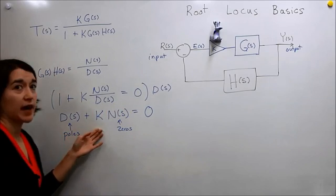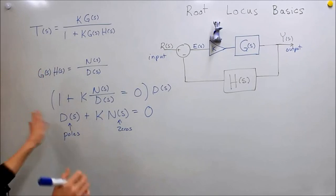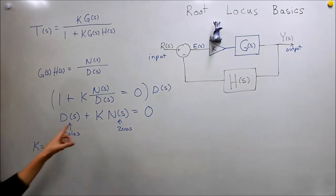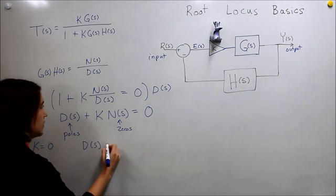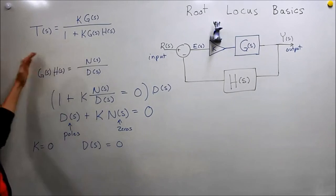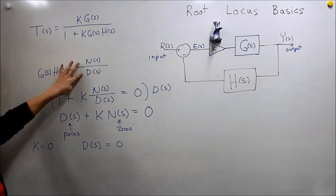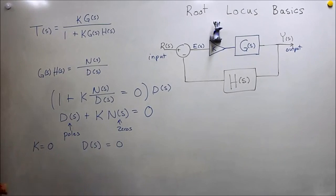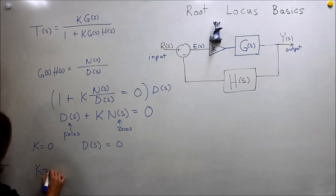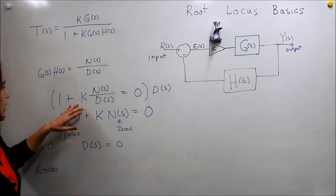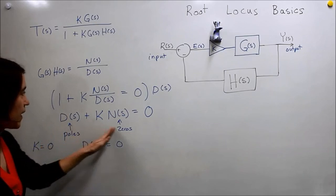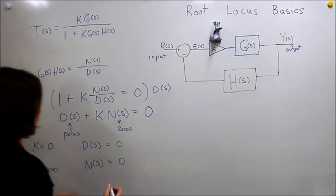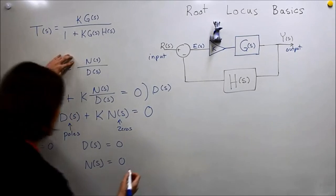And what we're going to do is vary K starting from zero to infinity. Look at this equation though. Think for a second, what if K is equal to zero? If K equals zero, our expression simply becomes D of S equals zero. So the poles of our G times H are the poles of our closed-loop system. Then let's take the other extreme. If K goes to infinity, these are essentially going to be completely ignored. K dominates, and all we have is N of S equals zero. These are the zeros.